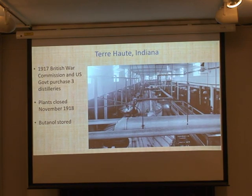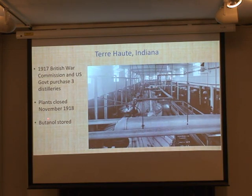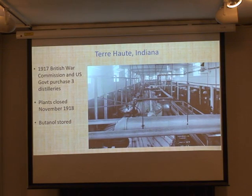Before the United States entered the war, the British War Commission and the US government purchased three distilleries in the maize belt in Terre Haute, Indiana, specifically for the production of acetone - really gearing up in a massive way. These plants didn't really start until the beginning of 1918, then stopped at the end of 1918. They were producing masses of acetone but loads of butanol, which they just stored in tanks. Weizmann apparently developed a method for converting butanol into methyl ethyl ketone, similar to acetone, which could also be used, but that was late in the war.